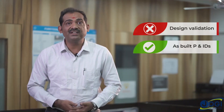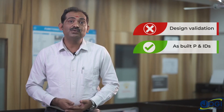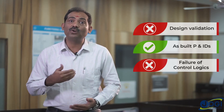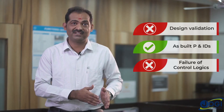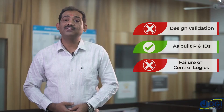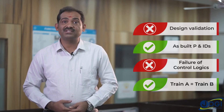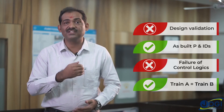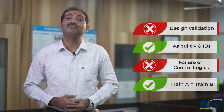Third, when identifying causes of process deviations, we should not consider the failure of control logics or control systems as a cause. Fourth, when there are two or more similar systems or trains, conducting HAZOP for one system need not be repeated for the remaining identical systems.